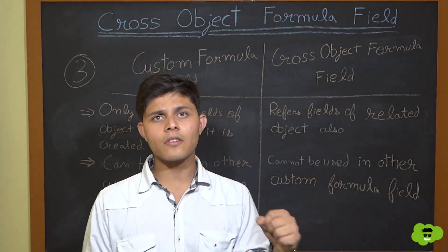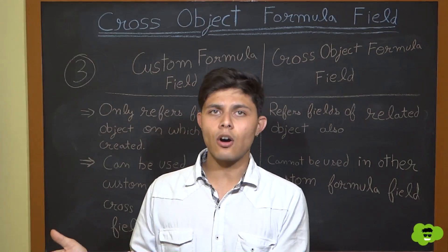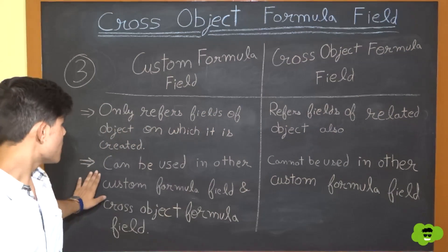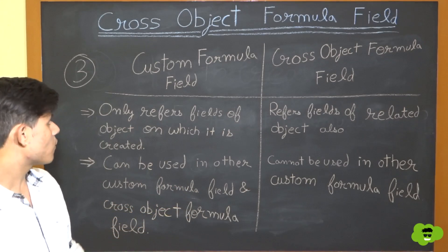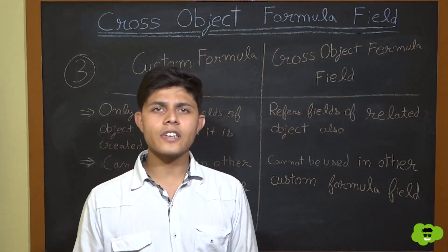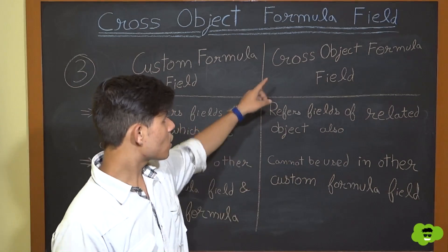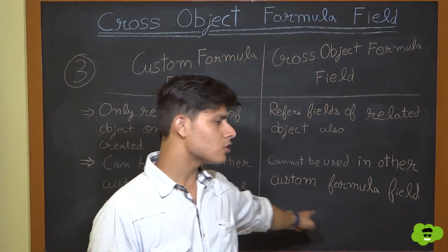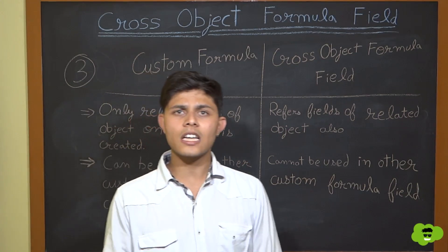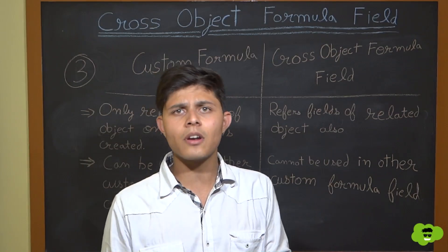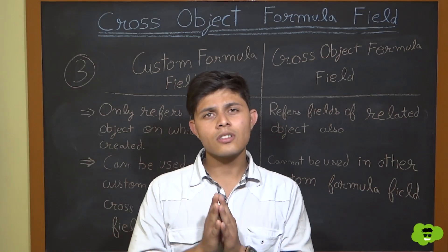There's nothing specifically called a 'cross-object formula field' in Salesforce — it's simply a formula field that refers to a field of another related object. The second difference: custom formula fields can be used inside other custom formula fields and cross-object formula fields. However, cross-object formula fields cannot be used inside custom formula fields, because doing so would make those custom formula fields indirectly reference another related object's field.